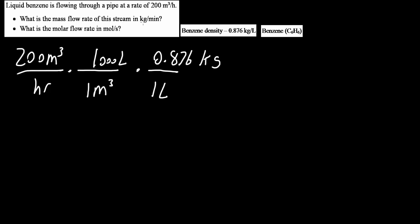Now we just need to get per minute. So we know that one hour is 60 minutes. And if we multiply everything out, we would get 2920 kilograms per minute.